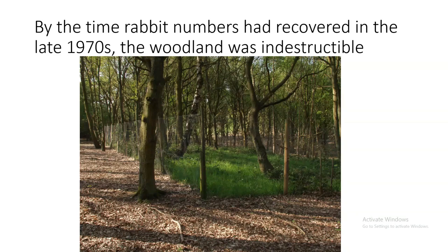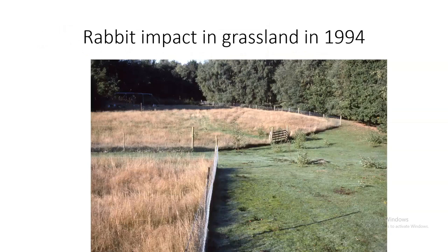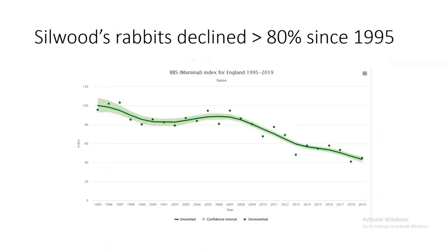The biggest impact of rabbits was in the grasslands of Silwood. A 1994 picture shows that in rabbit-grazed areas all grass flowering had been stopped by the intensity of grazing, whereas where rabbits are excluded the grasses have gone to seed and are straw-colored in summer. Since the mid-1990s rabbits have probably declined about 60 percent across England, but at Silwood the decline is more like 80 percent.